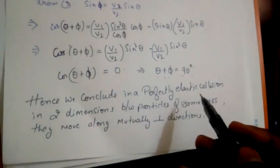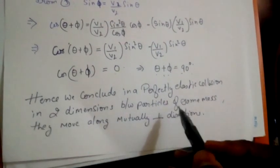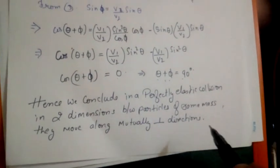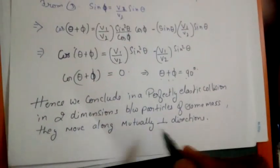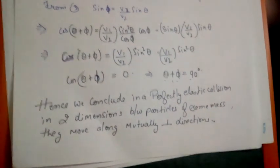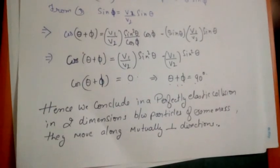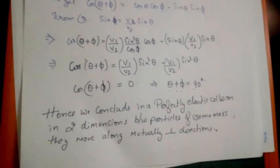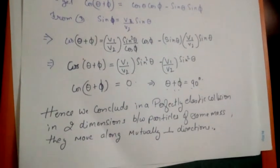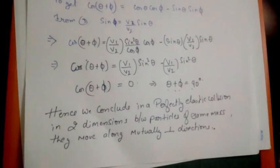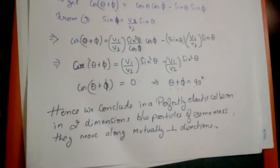Hence we conclude that in a perfectly elastic collision in two dimensions between particles of the same mass, where one is initially at rest, they move along mutually perpendicular directions after the collision. Thank you friends, hope you understand from this video. Please leave your feedback in the comments and suggest improvements or other derivations you'd like me to cover.